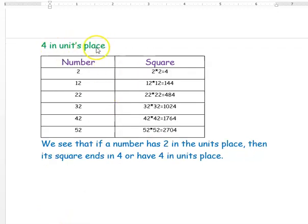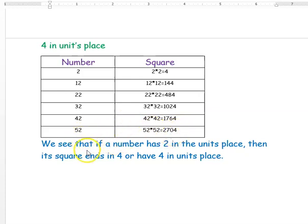Now we will see the number 4 in the units place of a square number. If you take number 2, its square is 4. If it's 12, its square is 144. If it's 22, its square is 484. If it's 32, its square is 1024. If it's 42, its square is 1764. If it's 52, its square is 2704. So if the number ends with 2 in its units place, then its square will end with 4 in its units place.